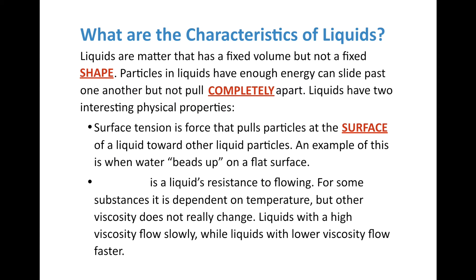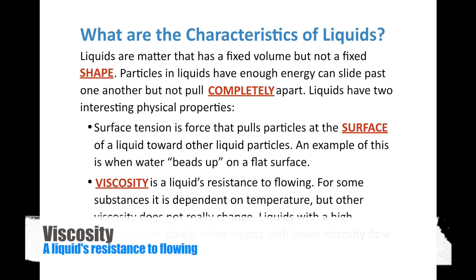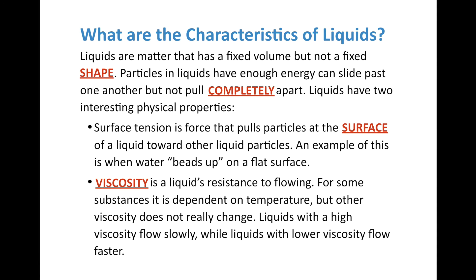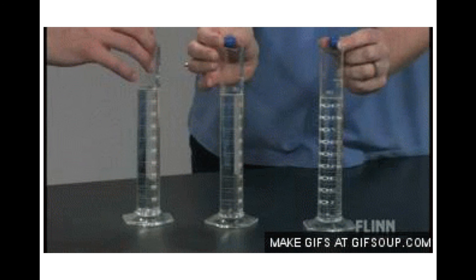The other interesting characteristic of liquids is viscosity — a liquid's resistance to flowing. For some substances viscosity depends on temperature, but for others it does not. If a liquid has high viscosity it flows slowly, while liquids with lower viscosity flow faster. You can also move through low-viscosity liquids much more easily. In this animated video, three clear liquids with three different viscosities have a ball dropped into each — the one on the left has low viscosity, the middle moderate, and the one on the right has high viscosity.